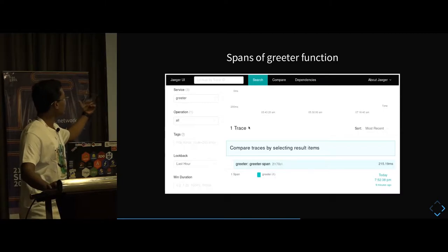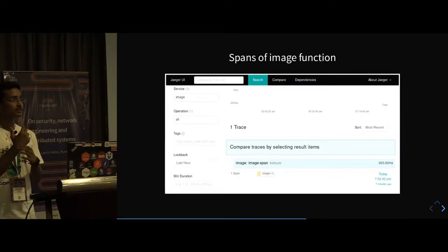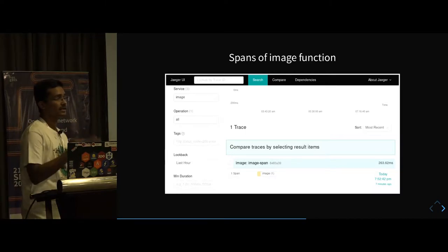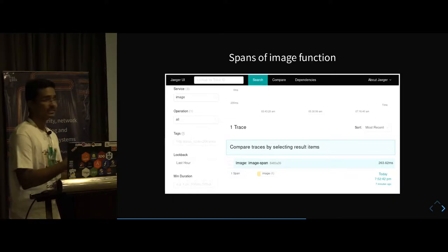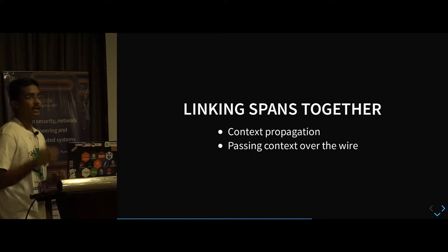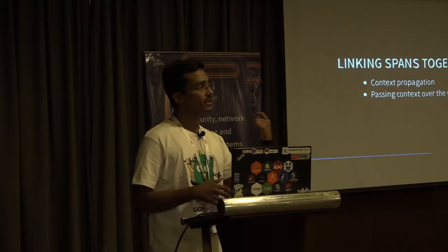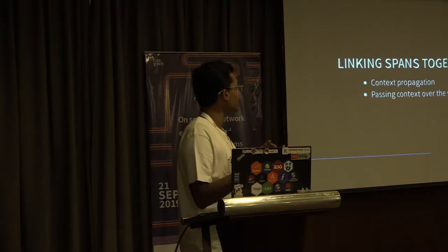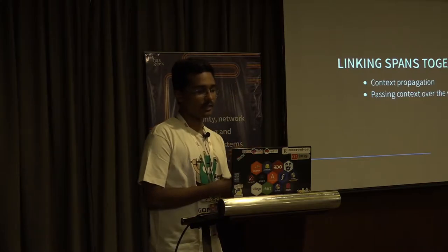As we saw, we have a greeter function span and an image function span. There is a problem — as we said you should get the whole path, but right now we are getting a separate span for one function and a separate span for another. To get spans linked together you need to do something called context propagation. Basically you have to tell where the previous request is coming from, and when the request goes outside you have to make sure that context is passed with the request. That is how the Jaeger backend links all spans together.